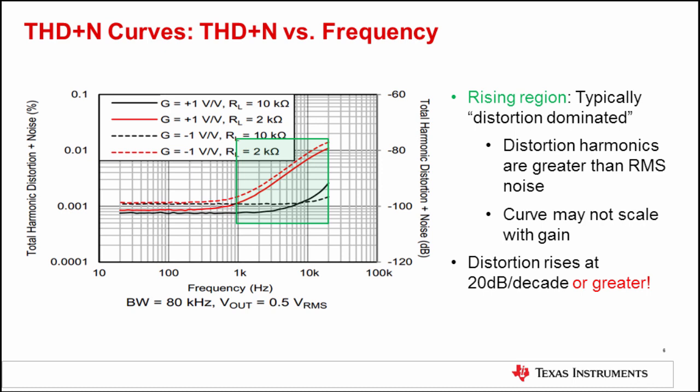The second region in the curve to take notice of is the area where the THD plus N rises with frequency. This region is referred to as distortion-dominated and is highlighted in green on this graph. In this case, the distortion harmonics of the fundamental are greater in amplitude than the RMS noise. The curve may not scale with gain. This is because there are different phenomena like common mode effects at lower gain that are minimized based on the gain and circuit configuration. Also note that the distortion will increase with increasing load current or lower impedance loads. For example, there is substantially more distortion for the 2 kiloohm load than the 10 kiloohm load cases. Finally, the distortion may rise at 20 dB per decade or greater.